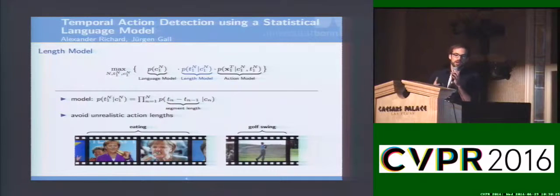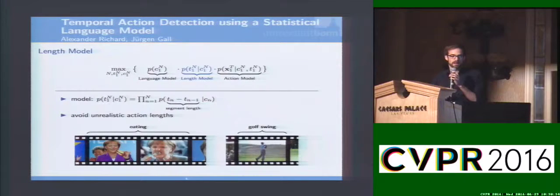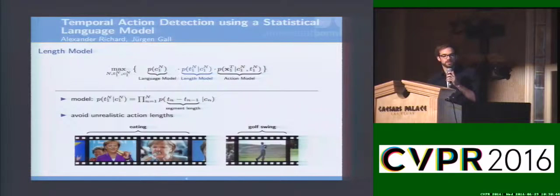The length model is to model different lengths for different classes. Here we consider the difference to the preceding segment end. What we can model with this is that an action like eating will be on average longer and undergo more variations than an action like golf swing. We need to incorporate this in our model.